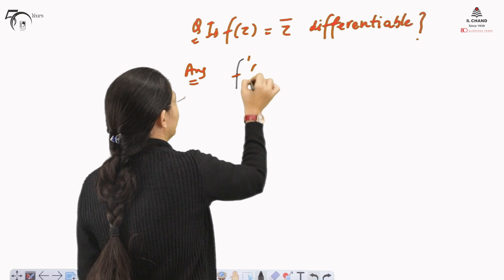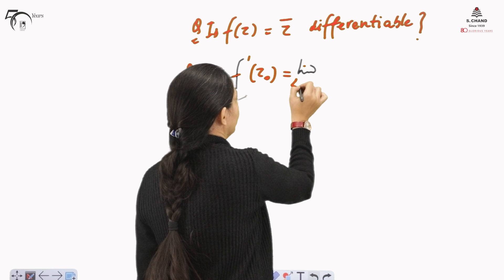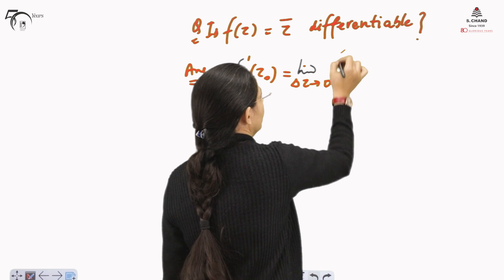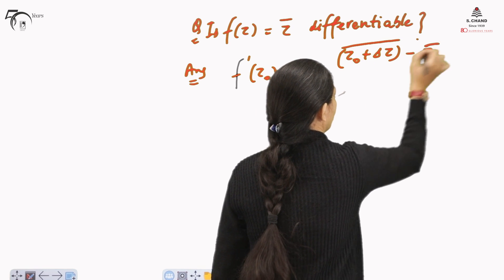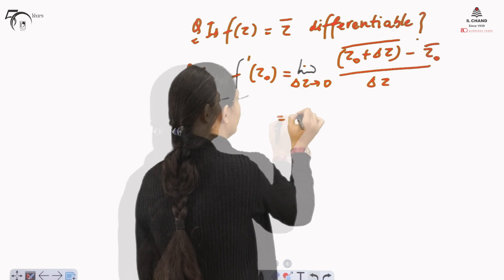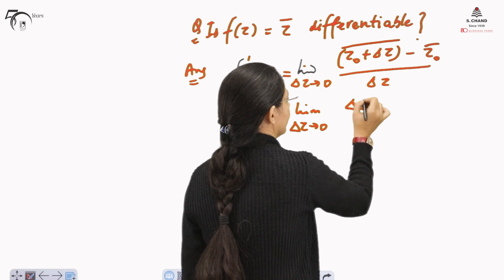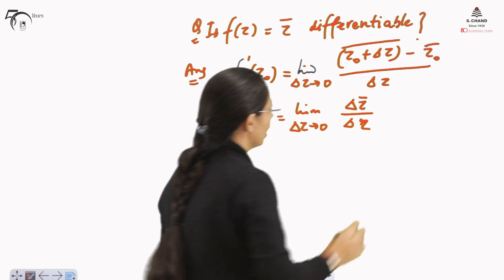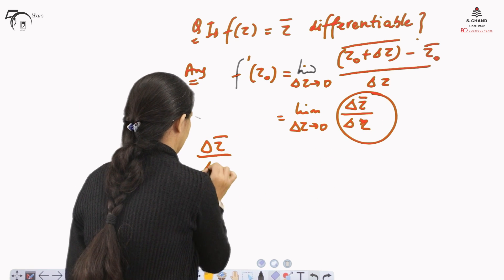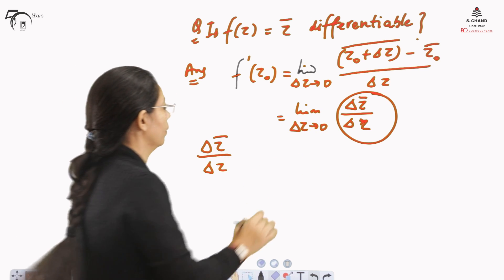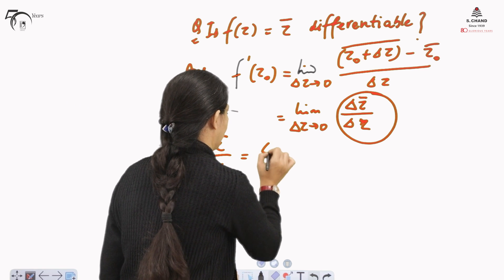We find f'(z₀) as the limit of δz tending to 0 of [z₀ + δz bar − z̄₀] divided by δz. This simplifies to the limit of δz tending to 0 of δz̄ divided by δz, which is (δx − iδy) divided by (δx + iδy). We cannot directly substitute δz = 0 since it is in the denominator.